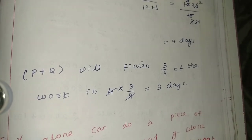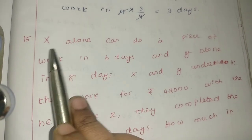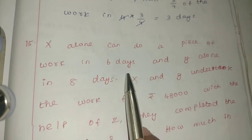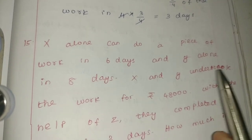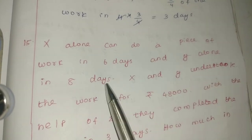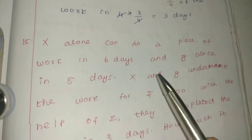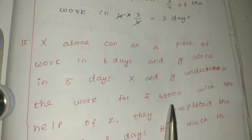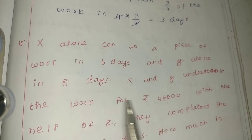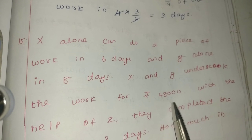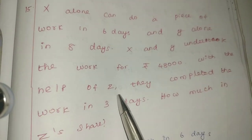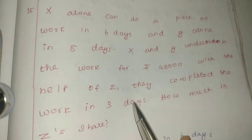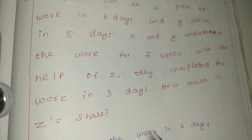15th sum: X alone can do the piece of work in 6 days, Y alone in 8 days. X and Y undertook the work for Rs.48,000. With the help of Z, they completed the work in 3 days. How much is Z's share?